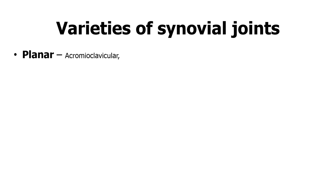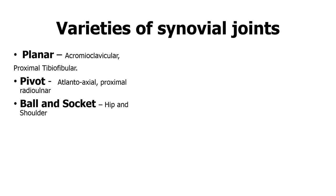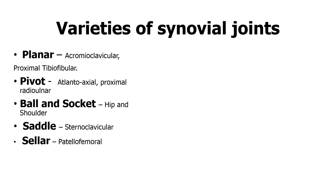There are many varieties of synovial joints. You have the planar synovial joint — examples being the acromioclavicular joint and the proximal tibiofibular joint. Then you have the pivot joint — examples being the atlantoaxial and the proximal radial joint. Then the ball-and-socket, which are on the proximal joints: the hip and the shoulder. Then the saddle joint, with the sternoclavicular joint as an example. Then the sellar variety — the patellofemoral joint — and the condylar variety for the tibiofemoral articulation of the knee.